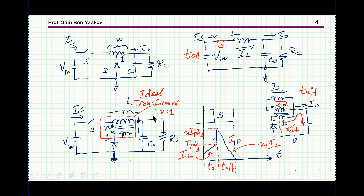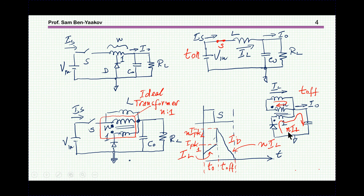We can look at the two states. During the on time, the diode is not conducting, so we see only the inductor. During the off time, there is no connection at the switch — the diode is conducting to the output. Notice that the current here is in fact the inductor current going into the N-turn winding and coming out at the other winding times N, because this is the N-to-1 transformer.